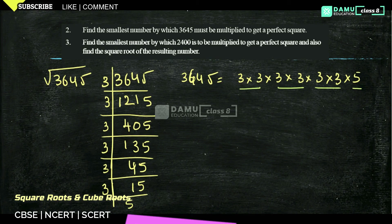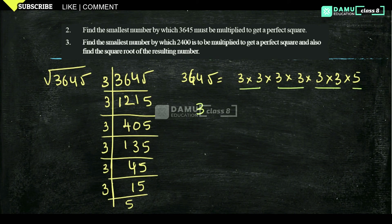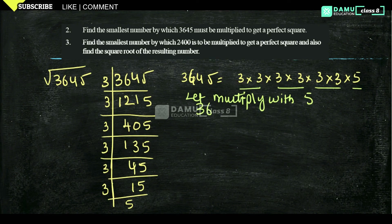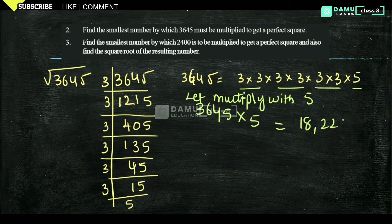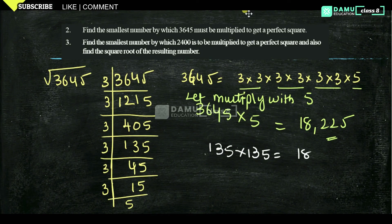There is no pair for this 5. So if you multiply by 5, then it will become a perfect square. 3,645 × 5 gives you 18,225. And 18,225 = 135 × 135.